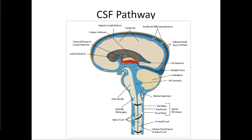It also circulates throughout the arachnoid mater in that subarachnoid space throughout the brain and spinal cord. It is in that subarachnoid space that it is absorbed into arachnoid villi and back into the bloodstream, so there's a constant, controlled exchange of fluid with the bloodstream as cerebrospinal fluid.